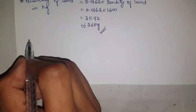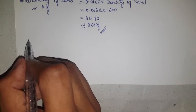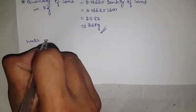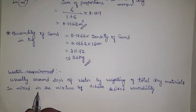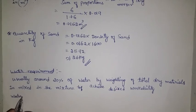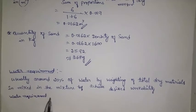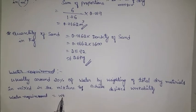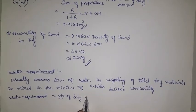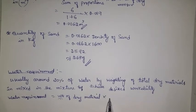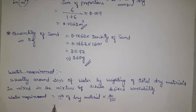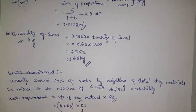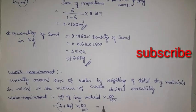Friends, we have calculated quantity of cement and sand. Now water requirement: water requirement is 20% of dry material weight. Calculation: (4 plus 26) into 20 divided by 100 = 6 liters of water.